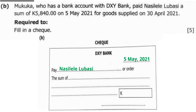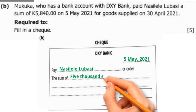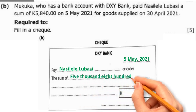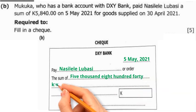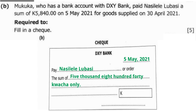Then the sum of — so how much are we paying? Here we are writing in words. How much are we paying Nasilele? We are paying 5,840 kwacha only. That's what you write, just like the one I've written.